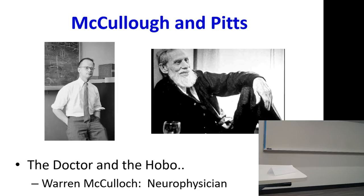One of them was Warren McCulloch and the other Walter Pitts. Warren McCulloch was a professor at the University of Chicago. Walter Pitts was a hobo who ended up at his door. Walter Pitts was 15 years old when he ran away from home and never went back. He used to exchange mail with Bertrand Russell, and one day at the ripe old age of 19, he ended up at Warren McCulloch's door.